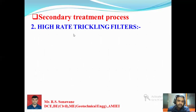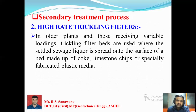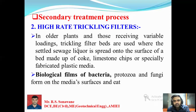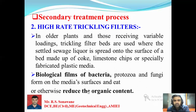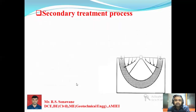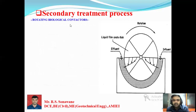The next process in secondary treatment is the trickling filter. For plants receiving variable loading, trickling filter beds are used where the settled sewage is sprayed onto the surface of a bed made of coke, limestone, and red shale. Bacteria, protozoa, and fungi grow on the media surface and, with the help of oxygen, reduce the organic content. This is how the trickling filter works. Another secondary treatment unit is the rotating biological contactor — influent enters and the discs rotate continuously.